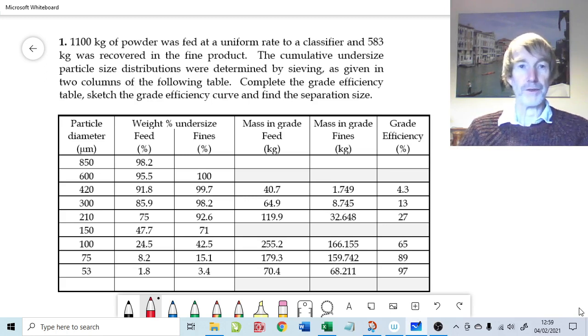Grade efficiency is conventionally defined as the proportion entering the fine product of a classifier. It's not always the best definition to use. Sometimes people are interested in removing material and in those circumstances you might want to redefine grade efficiency as amount of material going into the coarse product or reject. You have to be a little bit careful with grade efficiency. It can mean different things to different people. When you look at the values it should become apparent how it's being calculated.